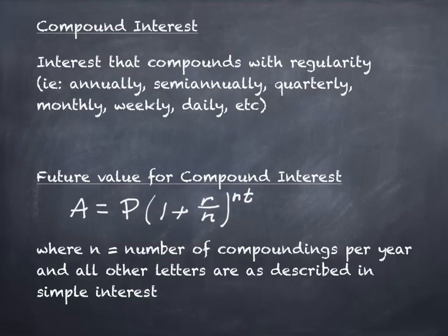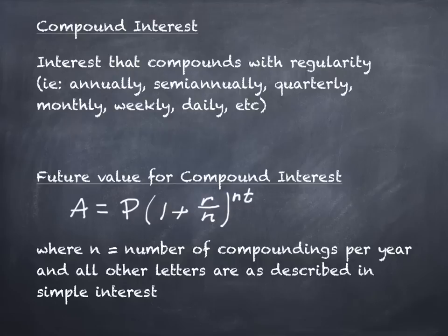A couple of words of advice for your calculator: the exponent NT has multiplication in it. I strongly recommend you multiply N times T first before entering it into your calculator. If you don't, your calculator may raise to the power of N first and then multiply by T — following order of operations — giving you a wrong answer. Simplifying the exponent first is the most common fix for calculator errors on this formula.